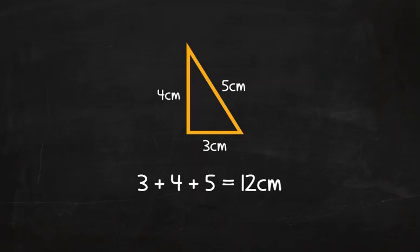And then there is the ever popular triangle. Add 3 plus 4 plus 5, which equals 12 centimeters.